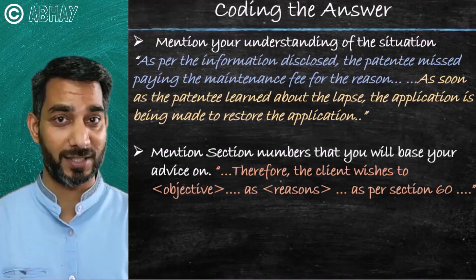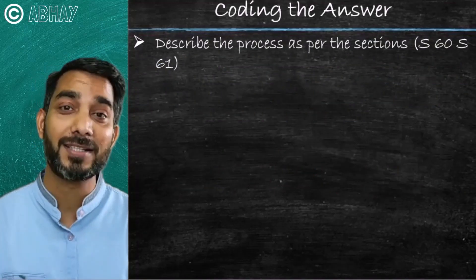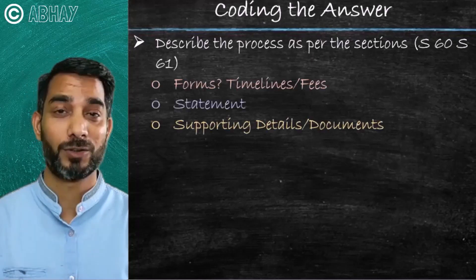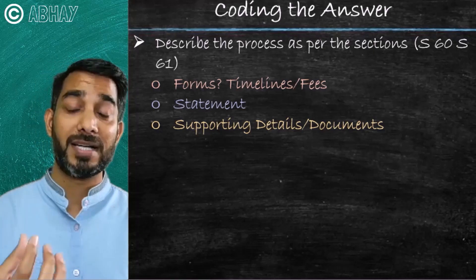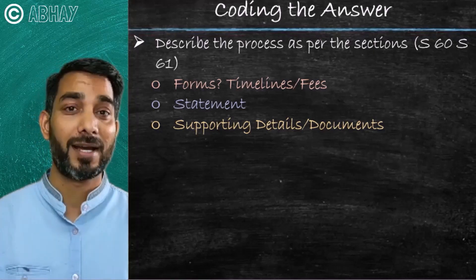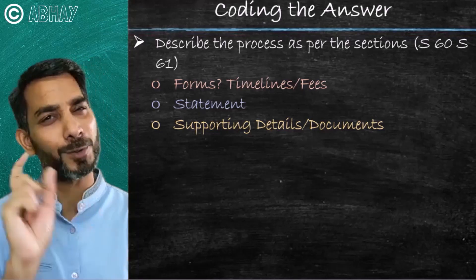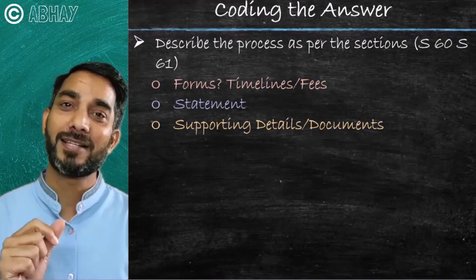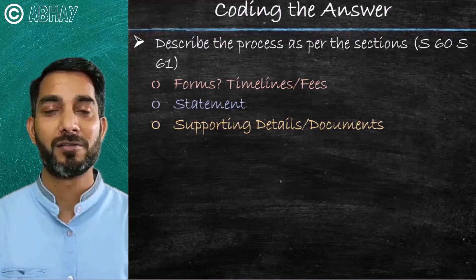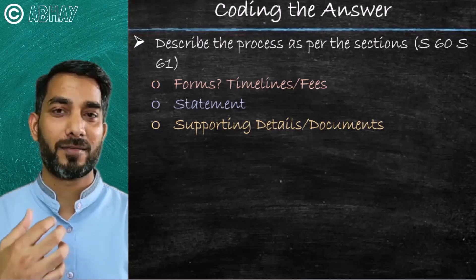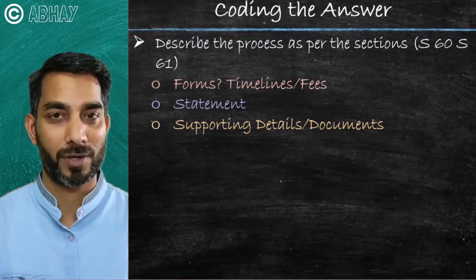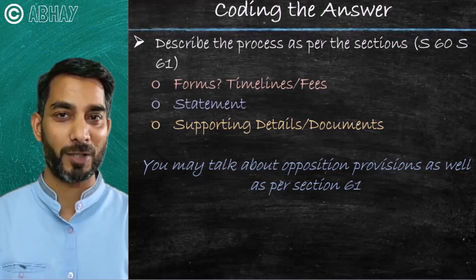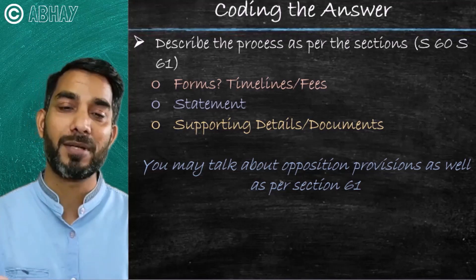Now, because you are quoting Section 60, you need to provide the details of the process with regards to Sections 60 and 61 — in terms of what is the form, what is the timeline. You need to provide a statement detailing the reasons for the lapse and why the application should be passed. There is a good video on this channel about restoration of patents. You need to provide supporting details as always when filing such cases at the patent office. As we know, an application for restoration of a patent can be opposed, so you could drop that hint in your response — that the application for restoration can be opposed as per Section 61.